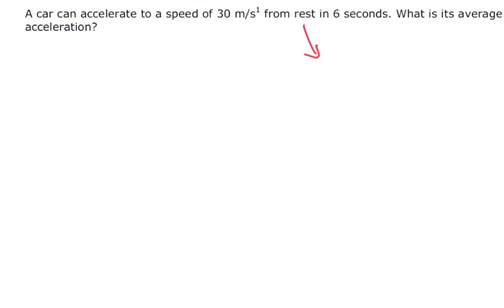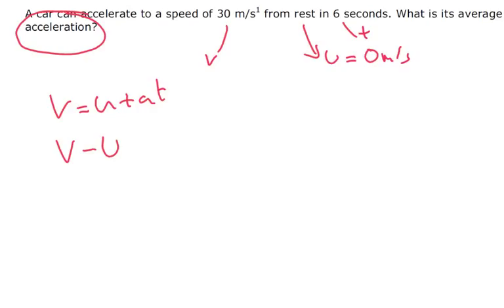Well, from rest, that means the initial velocity was 0. We've got T here, and we've also got V. So V equals U plus AT. We're looking for acceleration, so we need to make acceleration the subject. Let's start with V minus U equals AT. Then divide both sides by T. T's here cancel, and I'm left with A equals V minus U over T.